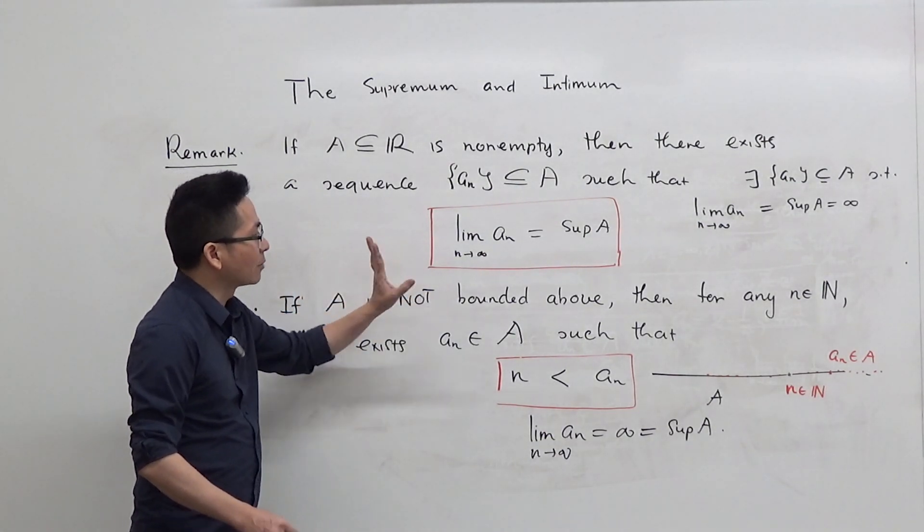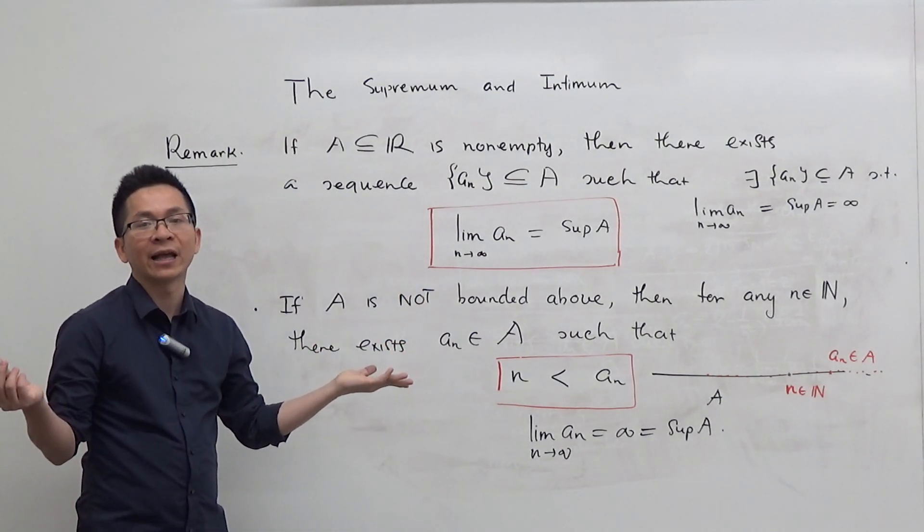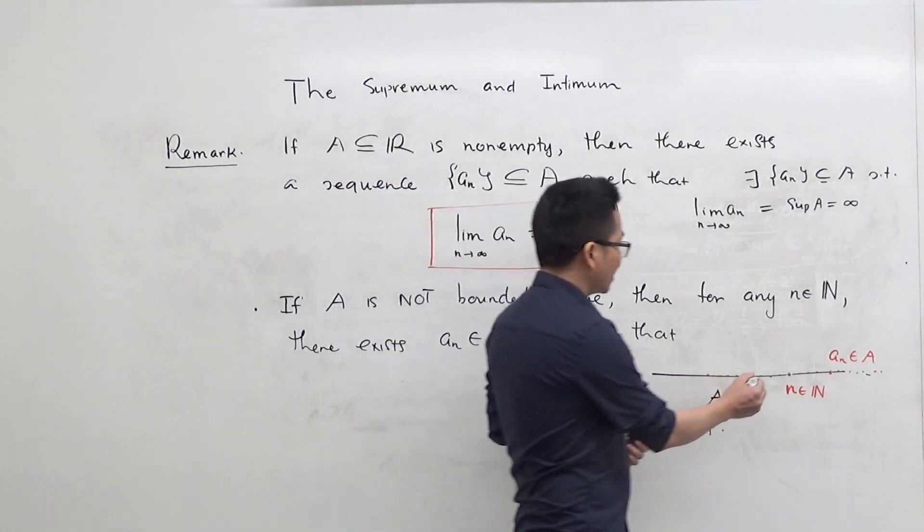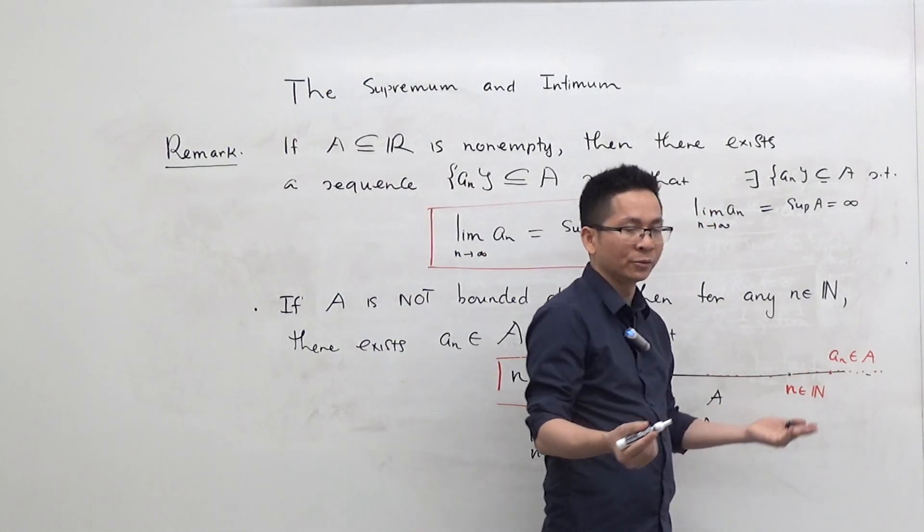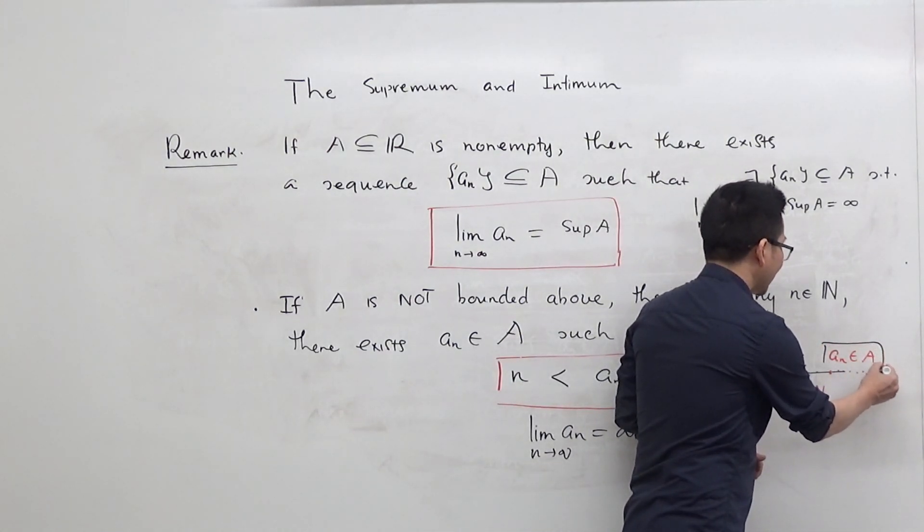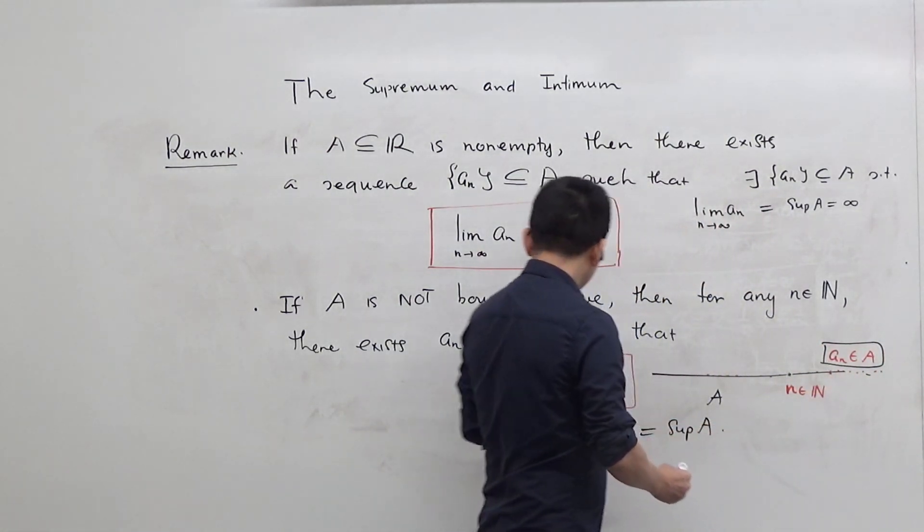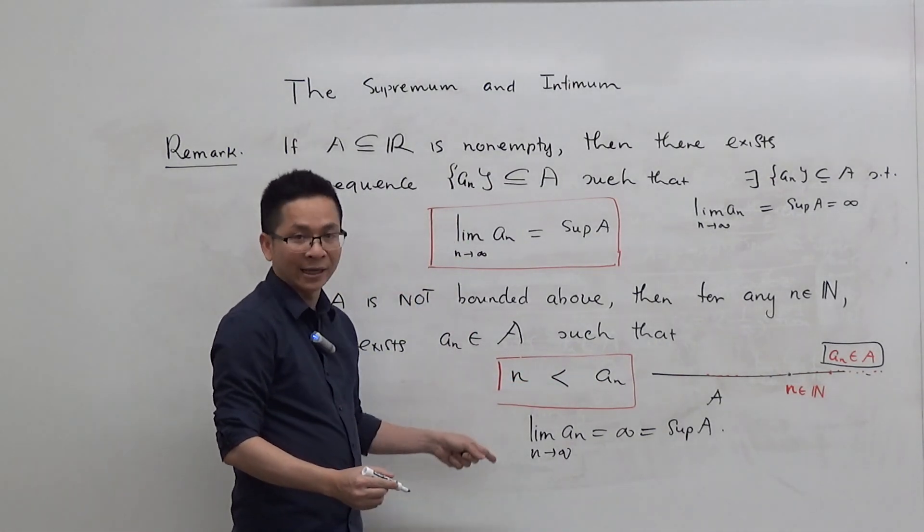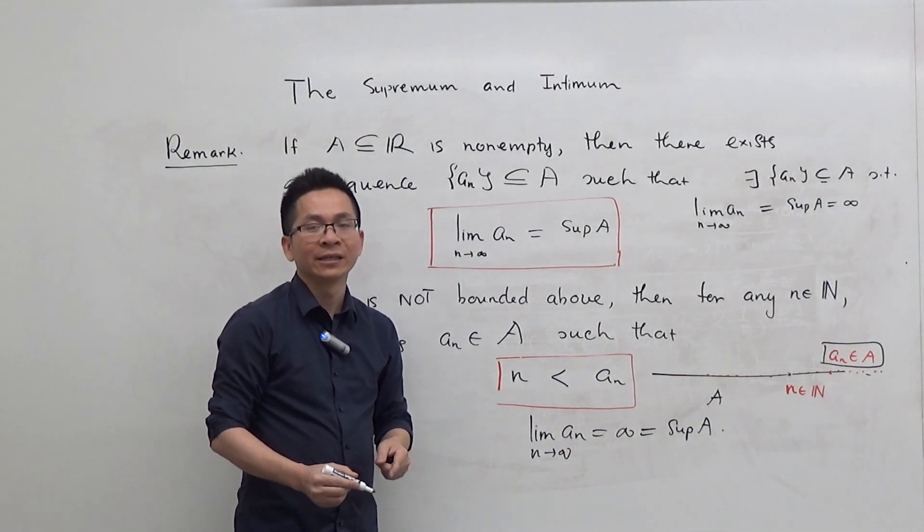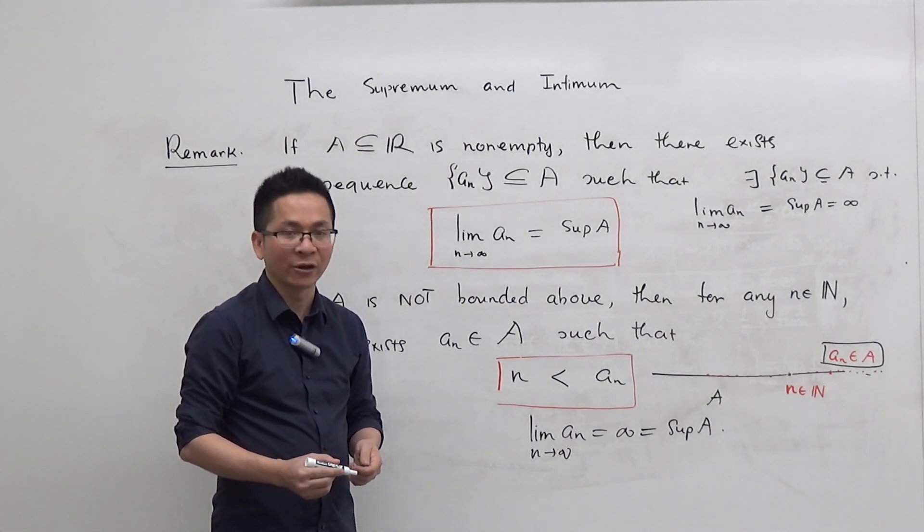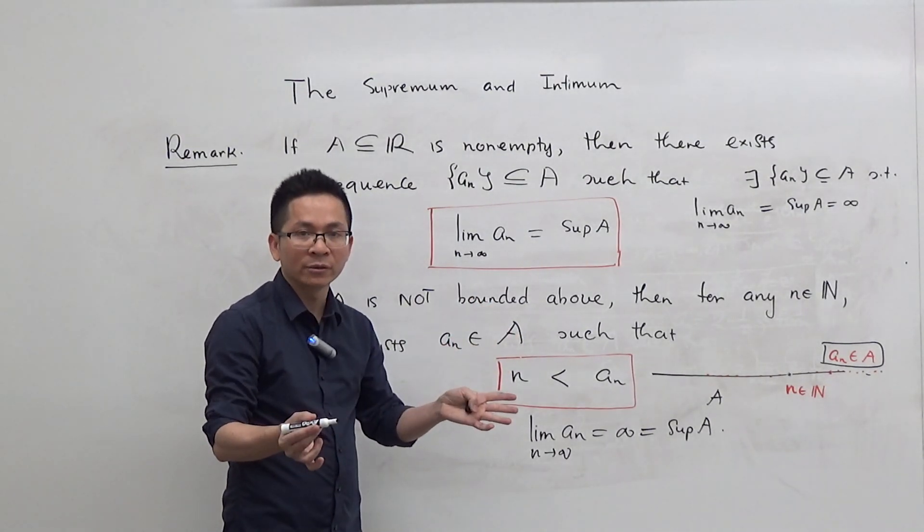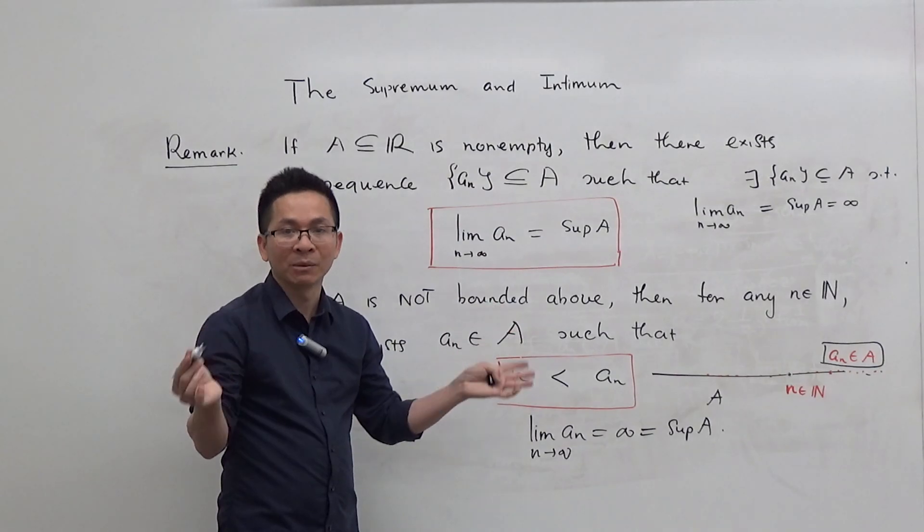So now because A is not bounded above, it doesn't have any upper bound. That means if you take any natural number n, say 1 or 2 or 3 or 4, you can always find some A_n in A such that A_n is strictly greater than n. Why is it true? Because A is not bounded above, it doesn't have any upper bound.